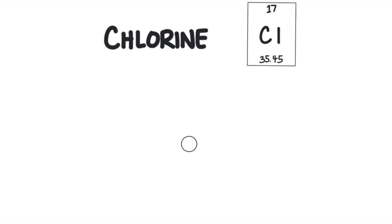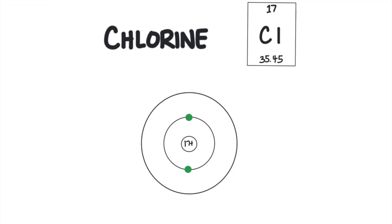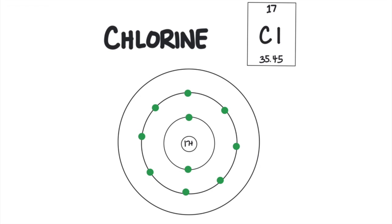To start, we draw a little circle to represent the nucleus. Most people will put the charge of the nucleus — that is, the number of protons — inside this circle. We'll write 17+, because the atomic number of chlorine is 17, which means it has 17 protons. Chlorine has 17 electrons because the number of protons and electrons will be equal in a neutral atom. The first ring can hold two electrons, represented by little dots. We put two dots in the first ring. The second ring can hold eight electrons, so we put eight dots there. We've accounted for 10 electrons. We still have seven more, so we add a third ring and put the remaining seven electrons into it. That accounts for all 17 electrons.